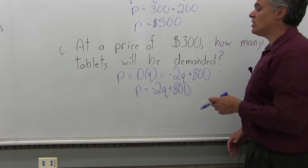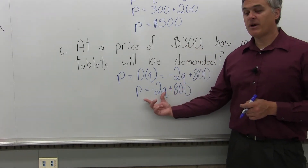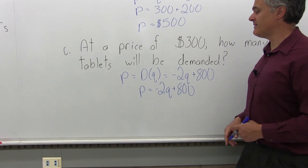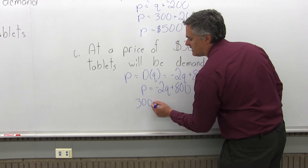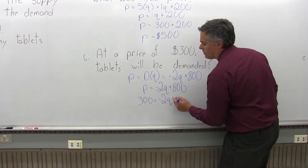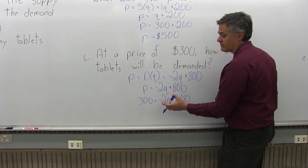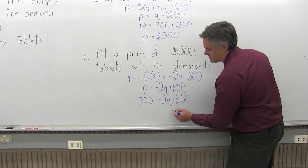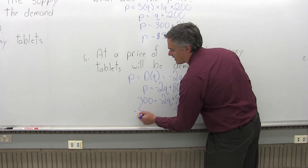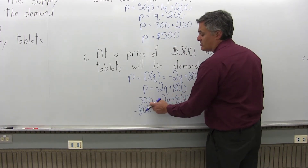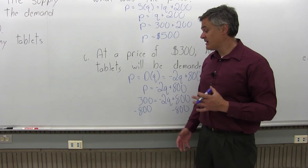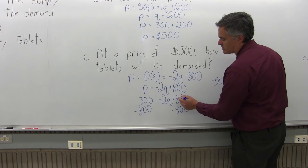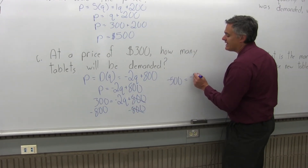They're asking about a price of $300 — what's the quantity demanded? The 300 goes in for P, since it's a price. So 300 equals negative 2Q plus 800. To get Q by itself, I move the 800 to the left by subtracting 800 from both sides. On the left, positive 300 minus 800 gives negative 500. On the right, positive 800 and negative 800 cancel, leaving negative 2Q.